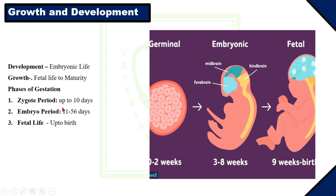The blastocyst develops into the embryo. The embryo phase starts from the 11th day to the 56th day of gestation. At this stage, organogenesis takes place, which means there is development of different organs of the animal body. Similarly, osteogenesis is a part of organogenesis. The third phase is fetal life, which starts after the embryonic phase up to the birth of the animal. In this stage, growth and development of the embryo takes place.